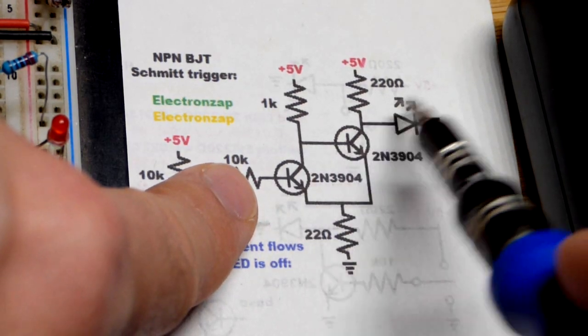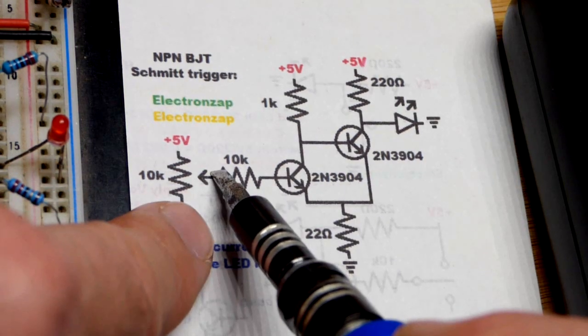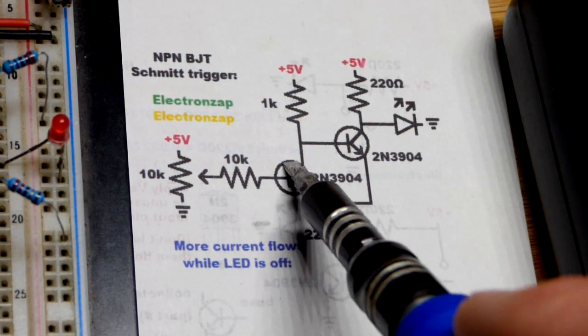When that one's on, that one's off, the LED will be on. Hopefully that makes sense. So you can see here, if we turn it off first, let's do that, then this is not conducting.